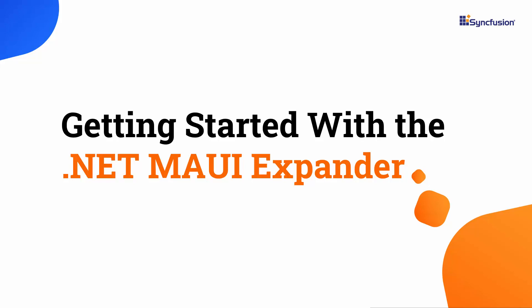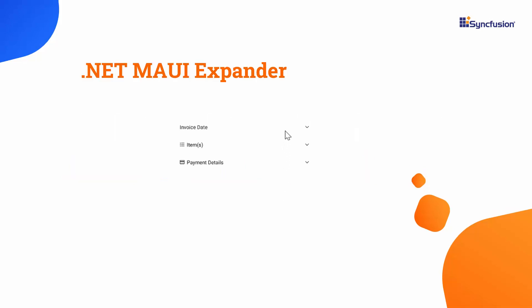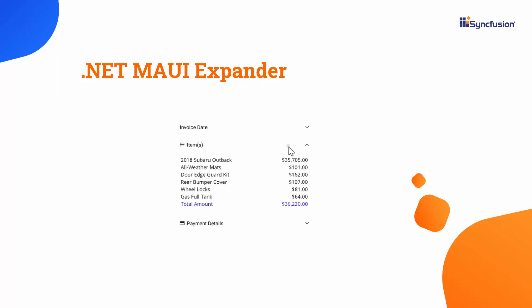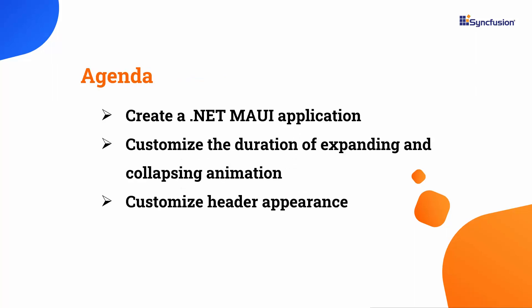Hi everyone, welcome to this tutorial on how to get started with the .NET MAUI Expander Control. The Expander Control is a layout control capable of loading any UI view in both the header and content sections. In this video, I will demonstrate how to add Syncfusion .NET MAUI Expander Control to a .NET MAUI project. Additionally, I will show you how to customize the duration of expanding and collapsing animations, as well as how to customize the appearance of the header.